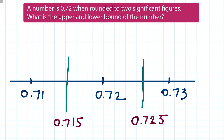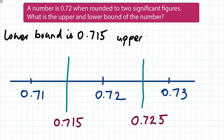So if we rounded a number off to two significant figures and get 0.72, that number must have been between 0.715 and 0.725. Anything less than 0.715, we would have rounded down to 0.71. Anything bigger than 0.725, we would have rounded up to 0.73. 0.725 itself would round up to 0.73, but we still say that's where the boundary is — where you switch from rounding to 0.72 to 0.73. Lower bound: 0.715. Upper bound: 0.725.